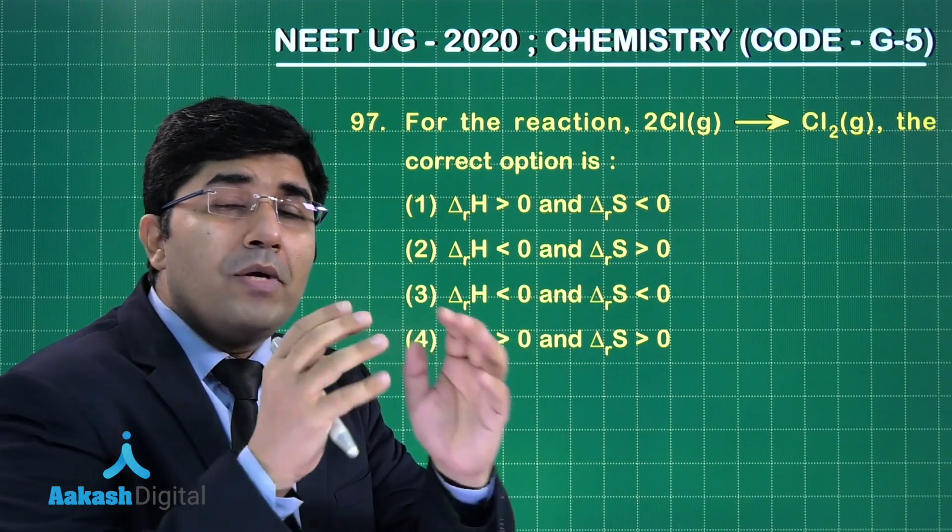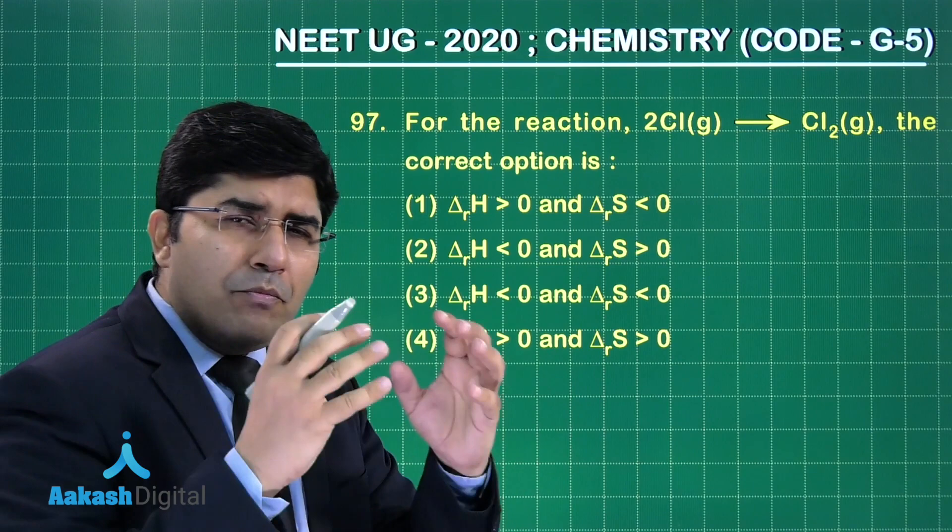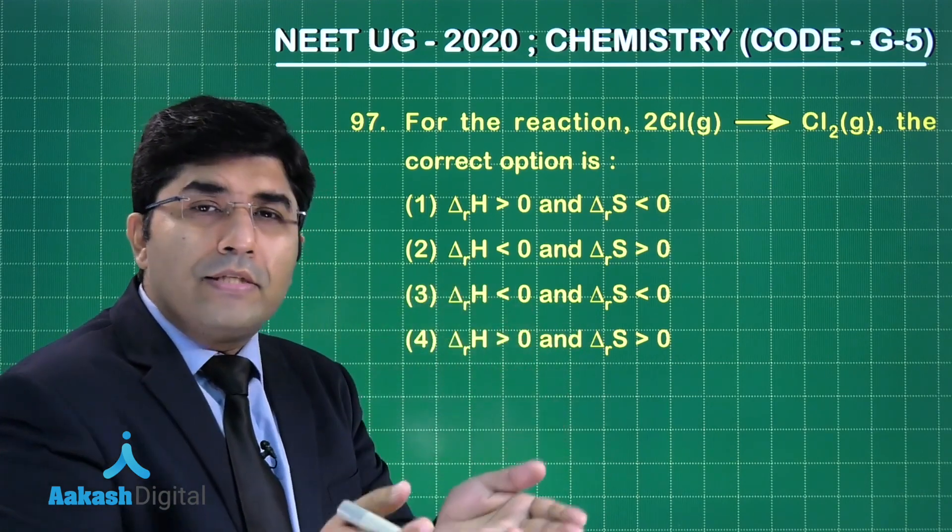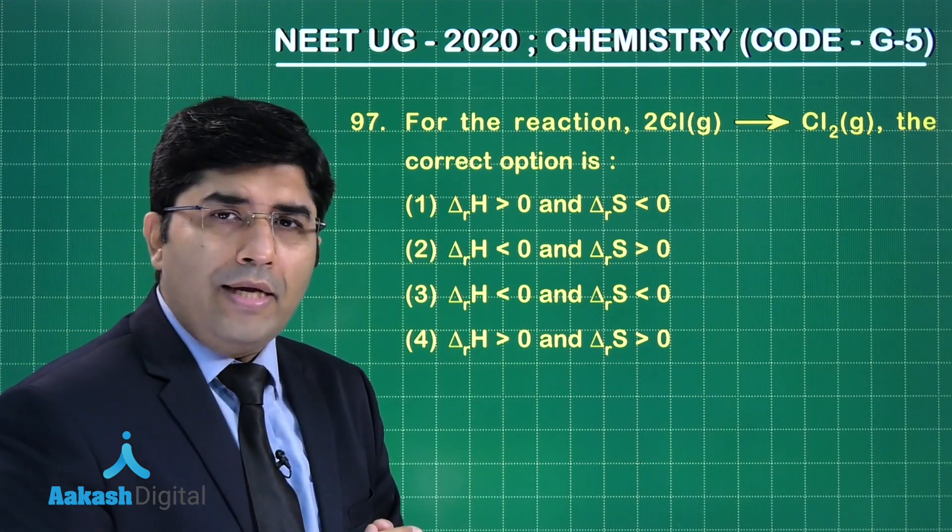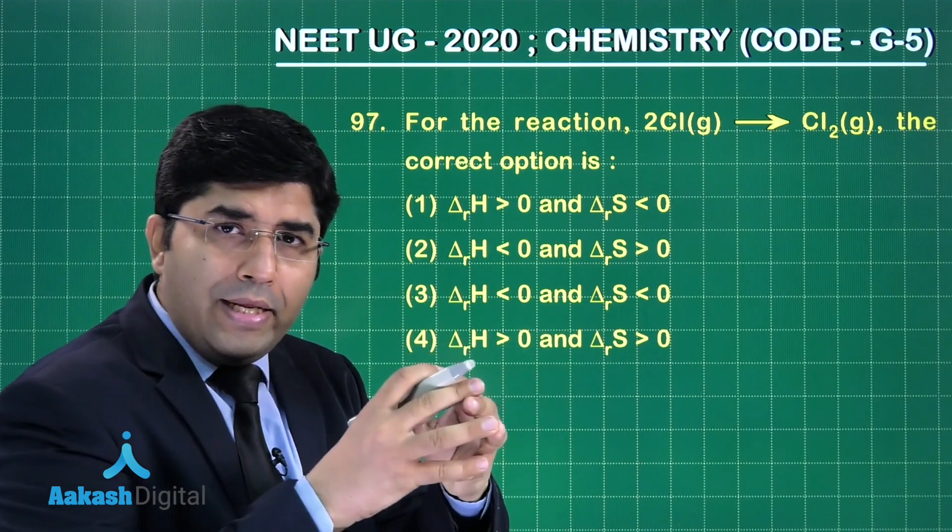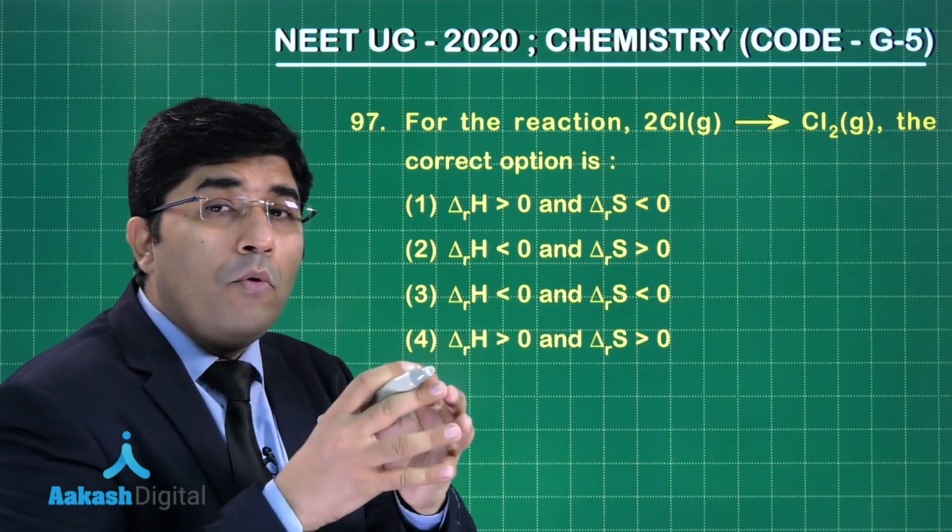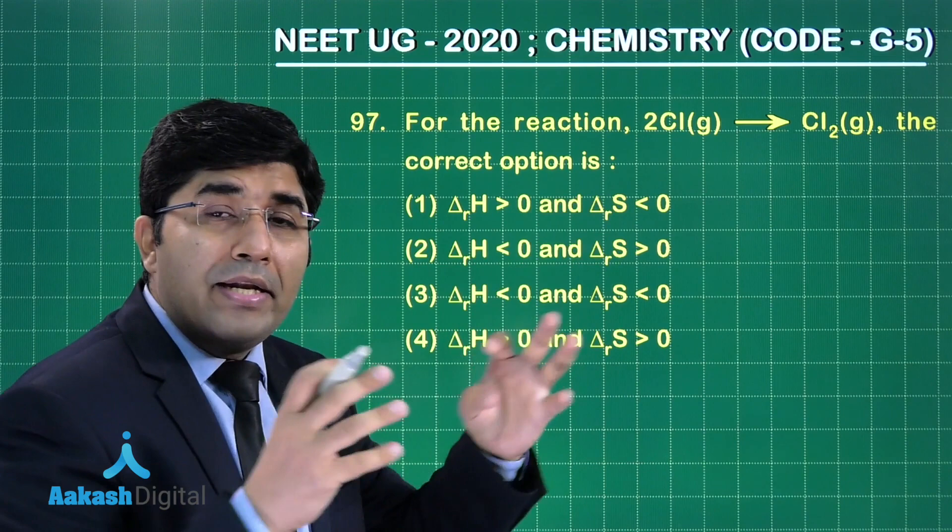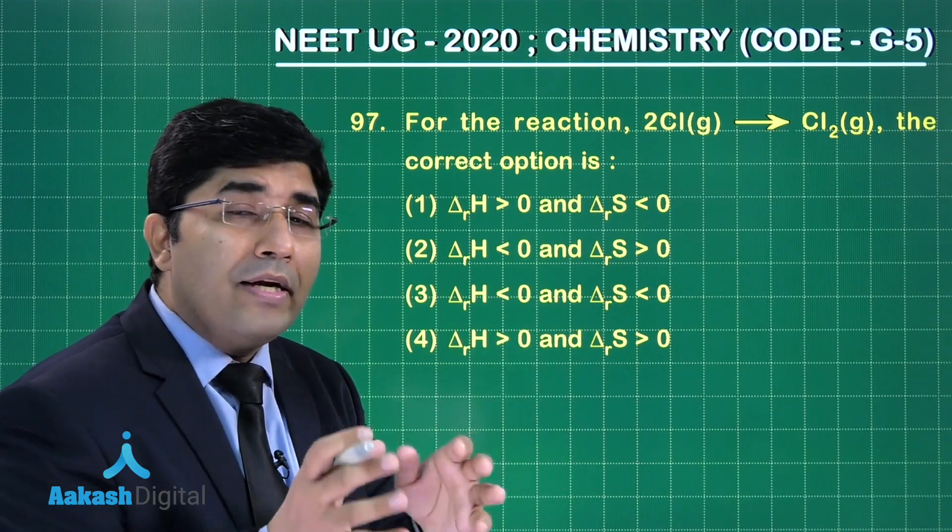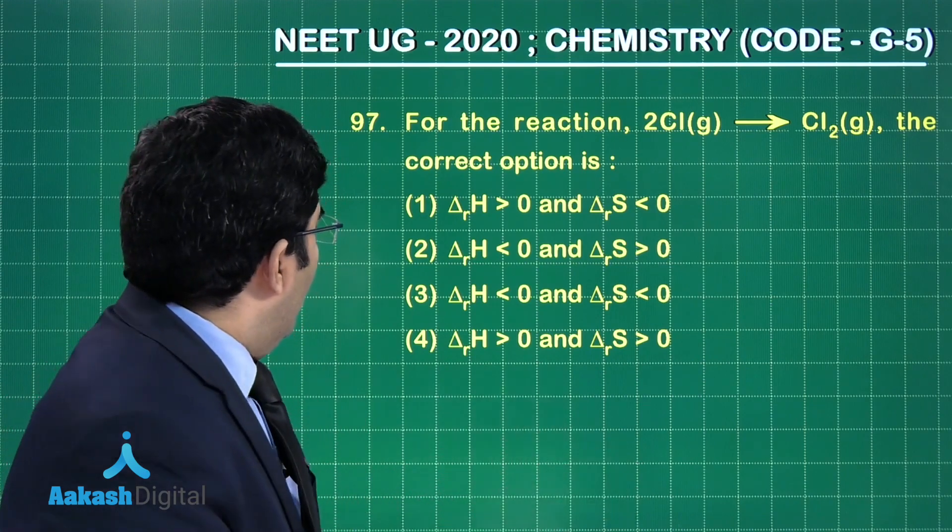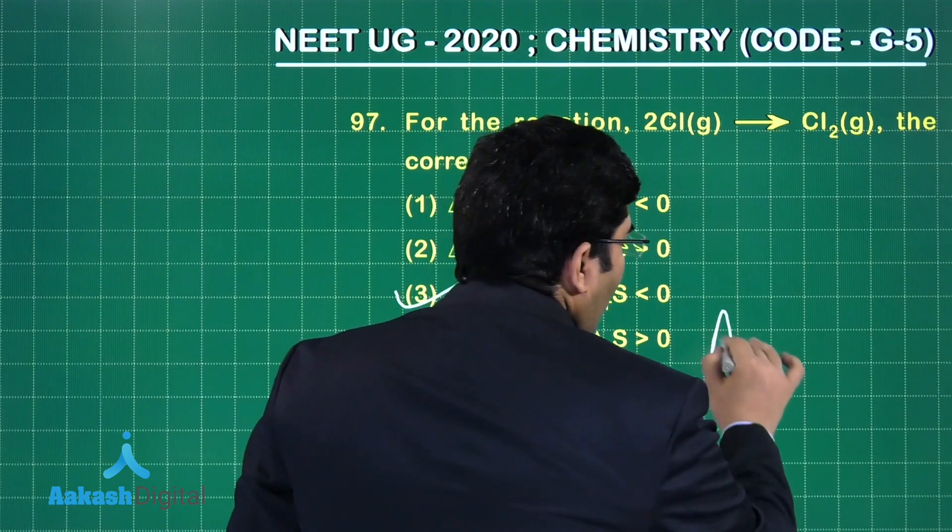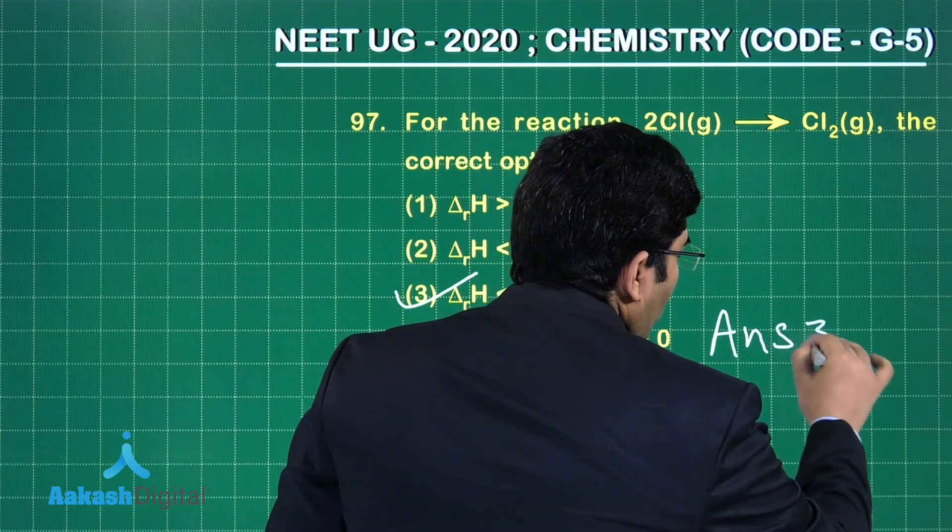So what is happening? Bond formation is taking place, and if bond formation is taking place then heat will be released. It's an exothermic reaction. And two mole atoms are combining to form one mole of chlorine gas, means number of particles are decreasing, therefore entropy will decrease. Therefore option number three will be the correct answer.